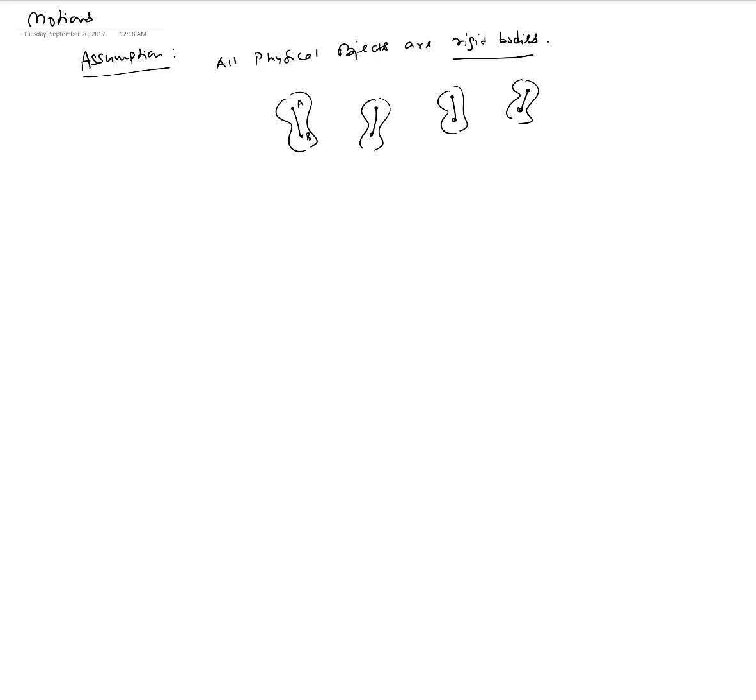The second is an idealization. This idealization is that all physical objects can be treated as either A) particles or B) rigid bodies which have shape and size.